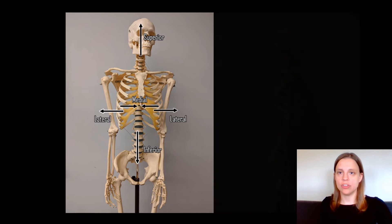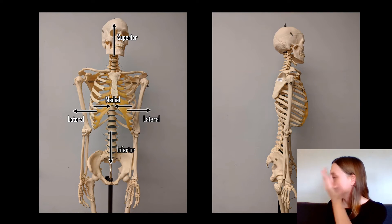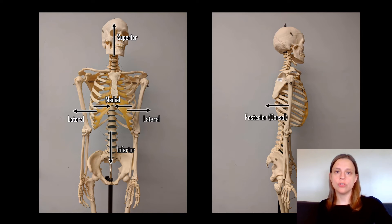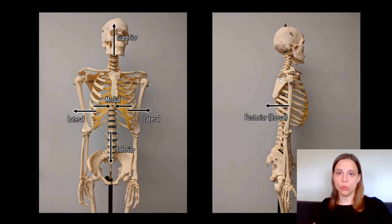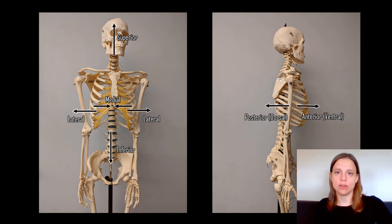If you imagine you split your body into a front half and a back half, anything closer to the back would be called posterior or dorsal, while anything closer to the front would be anterior or ventral.